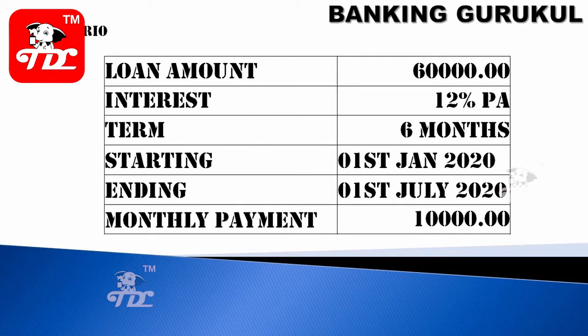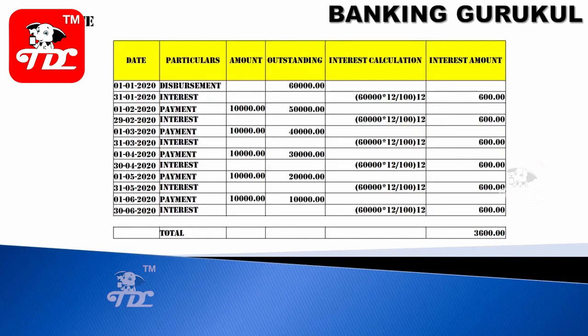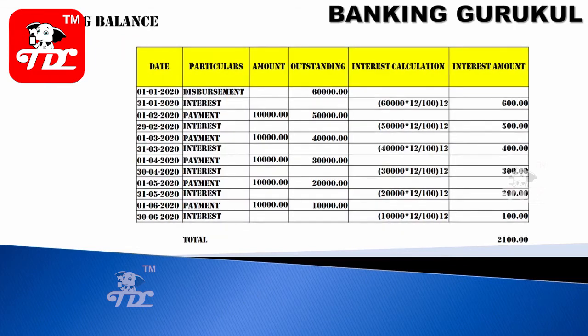Under flat rate: the loan is 60,000 at 12% per annum, which is 1% per month — so 600 rupees interest every month. I'm paying 10,000 rupees each month, so the outstanding balance decreases: 50,000, 40,000, 30,000, 20,000, 10,000. But notice the interest stays at 600 rupees every month because in flat rate, interest is always calculated on the original loan amount, not the outstanding balance.